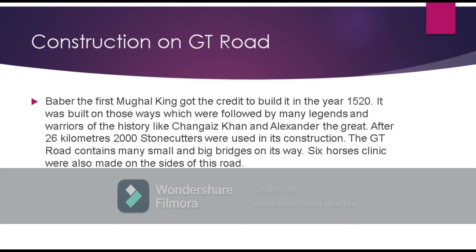Babur, the first Mughal King, ordered the Grand Trunk Road to be built in the year 1520. It was built on those ways which were followed by many legends and warriors of history, like Genghis Khan and Alexander the Great. After every 2 km, stone markers were used in its construction. The GT Road contains many small bridges on its basic sections, and cleaning walls are also made on the sides of this road.